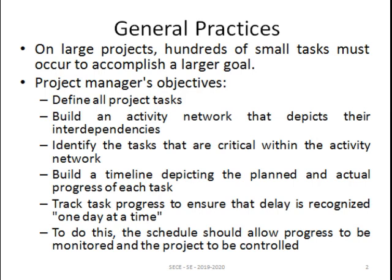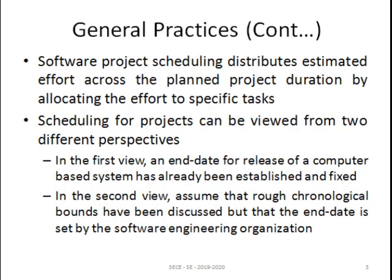These are all the activities which are going to be done in the project schedule. The schedule should allow progress to be monitored and the project to be controlled. Software project scheduling distributes estimated effort across the planned project duration by allocating the effort to specific tasks. For each and every task, some time will be allocated and within that particular time the task has to be completed.